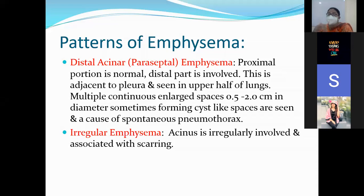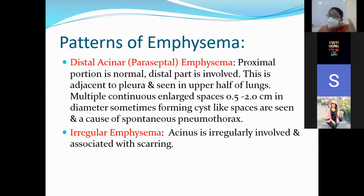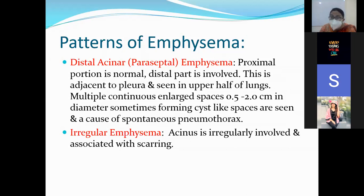In the distal acenar type, there are multiple continuous large spaces — multiple cyst-like spaces are formed. These cyst-like structures may rupture. Since the distal acenar is near the pleura, whenever there is a rupture of these blebs, it may cause the formation of a spontaneous pneumothorax. This point is very important — in MCQs or short answer questions, anyone can ask about the complication of emphysema, and spontaneous pneumothorax can be seen especially in the distal acenar type.